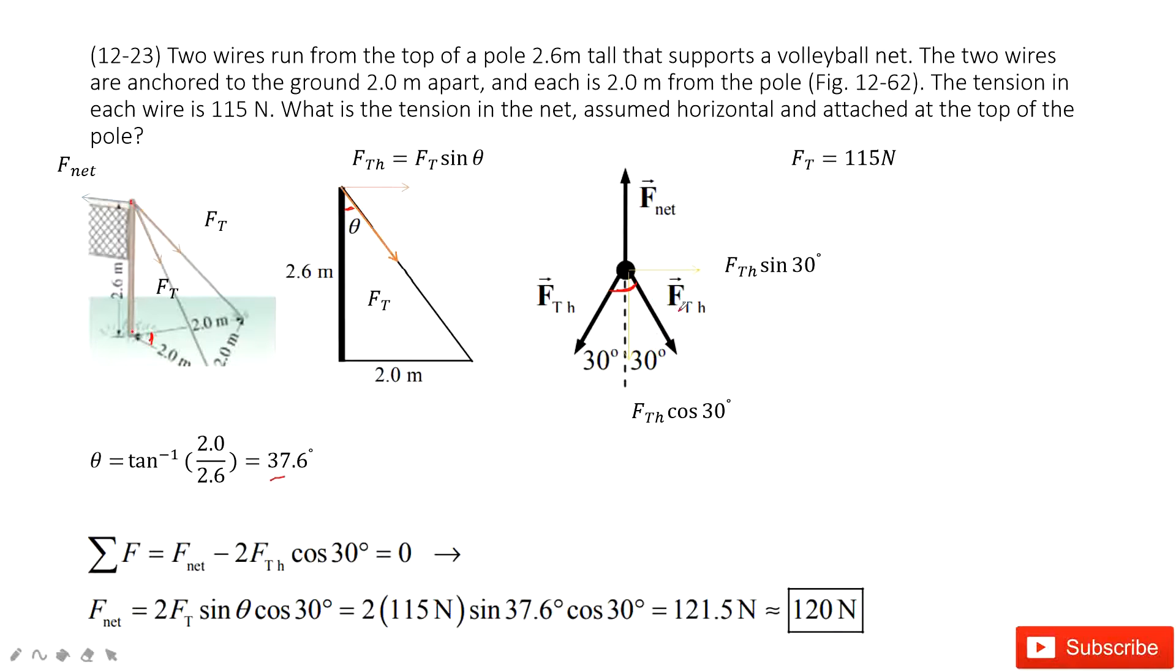We can project this FtH in the X component and Y component. This one is FtH sine 30 degrees, this one FtH cosine 30 degrees. You can see, on the X component, it can be balanced. Because this FtH can project on this side. So we only need to make sure the Y component is balanced. So we have Fnet equals 2 times FtH cosine 30 degrees. The net force is zero.